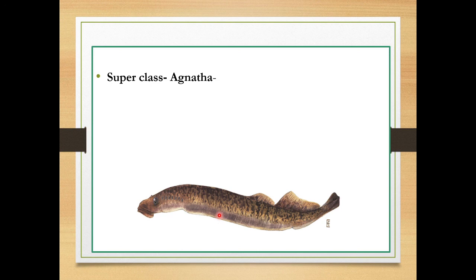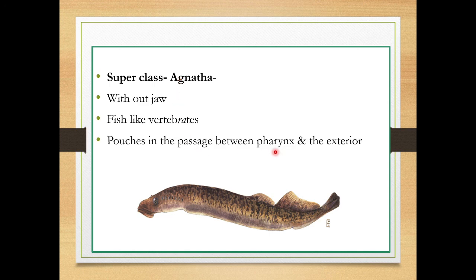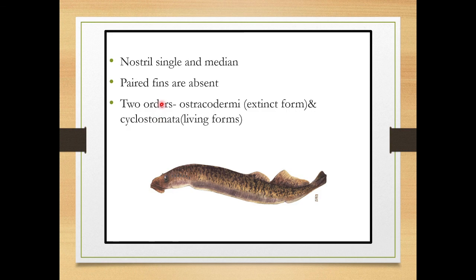There are two superclasses under subphylum Vertebrata. The first is superclass Agnatha. The main characters: they are jawless, hence the name Agnatha. They are fish-like vertebrates. They are not fish but look like fish. There are pouches in passages between the pharynx and the exterior. A distinct cranium with a notochord is present, and nostrils are single and median.